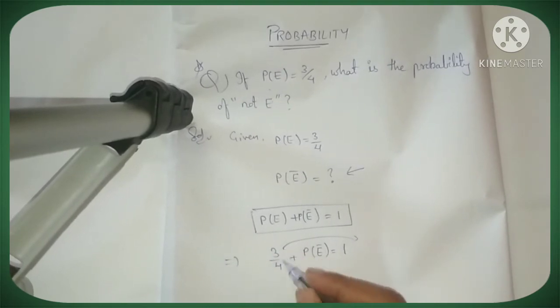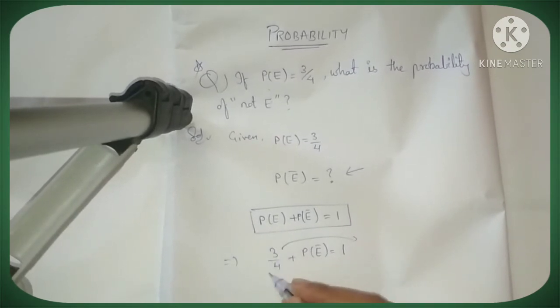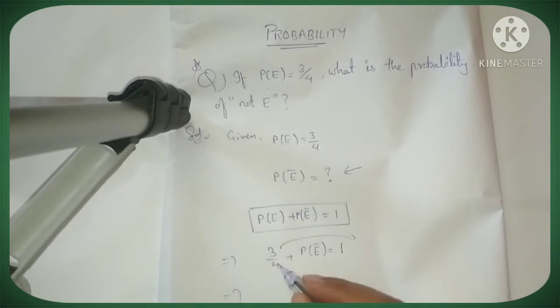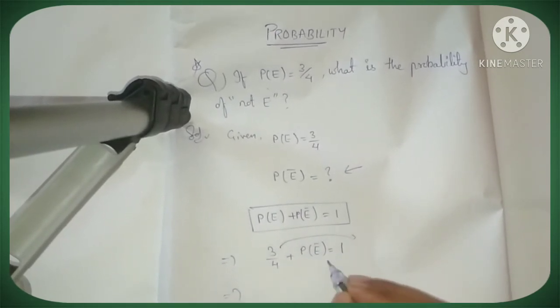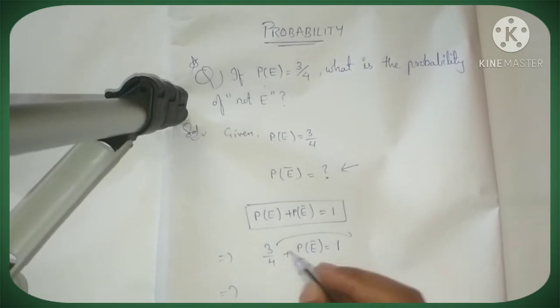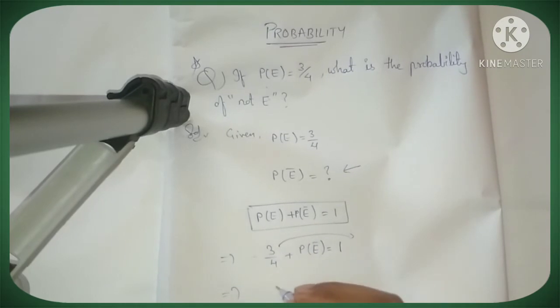When we send the complete number 3/4 to the other side, it's positive here but will change to negative when moved. So P(not E) = 1 minus 3/4. Here we need to take LCM.